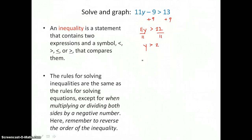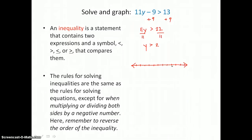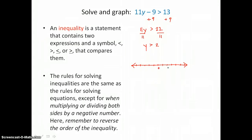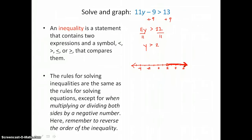Our solution is an infinite number of solutions: y is greater than 2. We graph the solution to an inequality on a number line because it represents an infinite number of values. We'll have our number line with equally spaced tick marks, positives to the right and negatives to the left, with 0 at the origin. We locate the critical value 2 and put an open circle at 2, indicating that y can't equal 2. Values greater than 2 are to the right, so we shade to the right of 2, including the arrow to show it goes on forever.